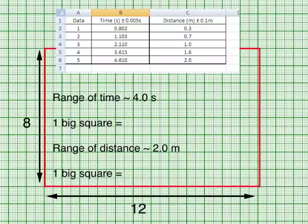If I were to use 8 big squares to plot the range of time, how much is 1 big square? Well, that's easily computed. 4 divided by 8 is going to give me 0.5 second for each big square. If I were to use 10 big squares to plot the range of distance, 1 big square will take 2 divided by 10, which is 0.2 meter.